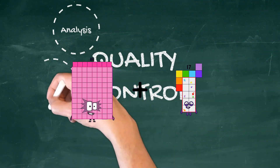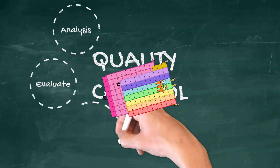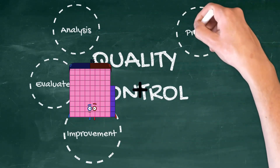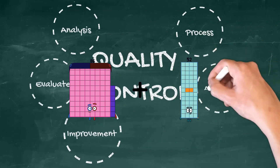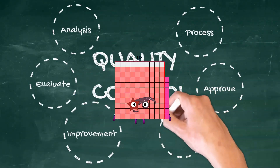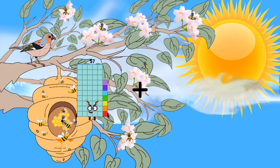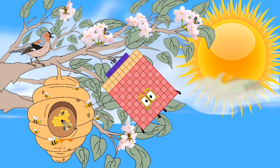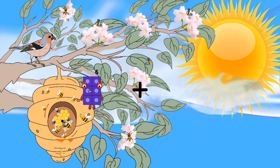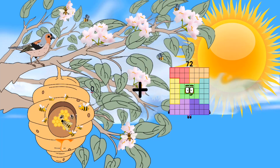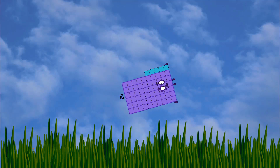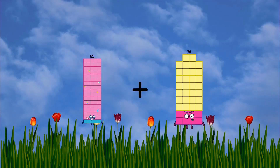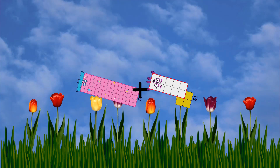88 plus 73 equals 161. 86 plus 32 equals 118. 57 plus 69 equals 126. 0 plus 65 equals 55. 85 plus 13 equals 98.